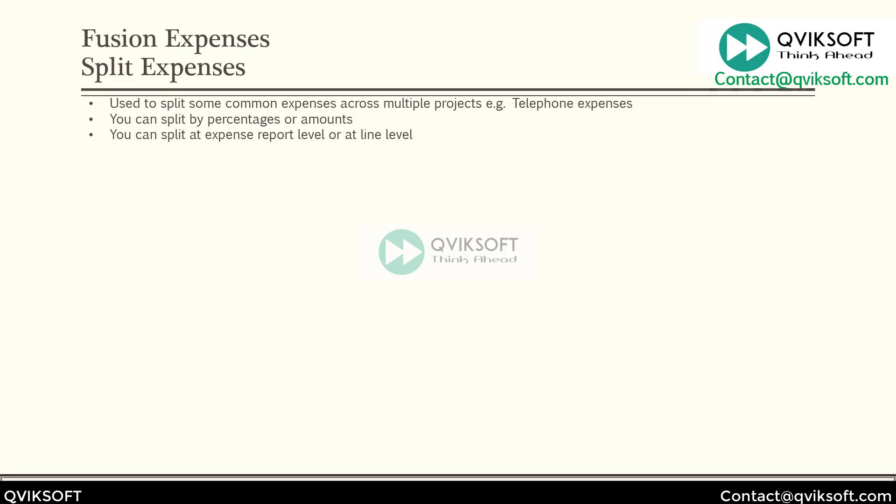You can split at the expense report level or at the expense line level. There is no option called 'split at expense report level' as such, but if you have 10 expense report lines and select all those lines and choose split, then whatever formula or ratio percentage you give, it will apply that to all the lines. After that, if you need to change a few lines, you can go to that line and adjust it accordingly.